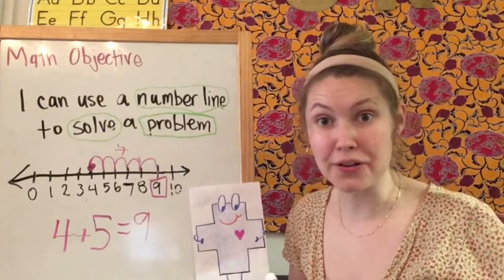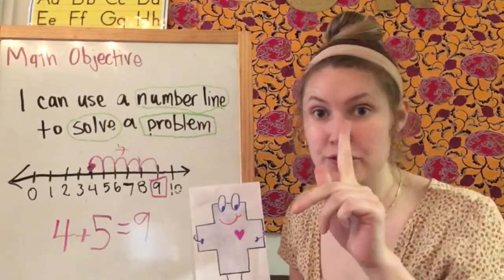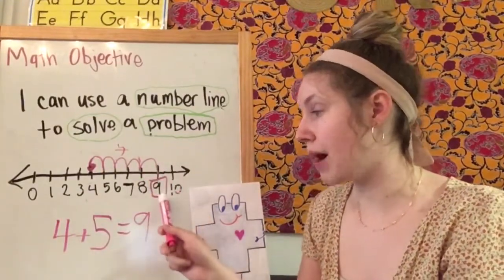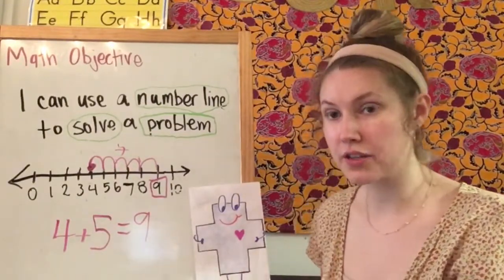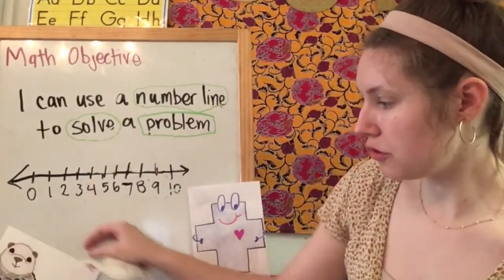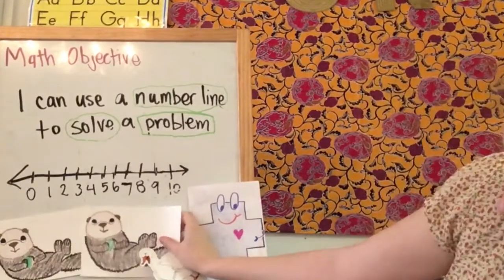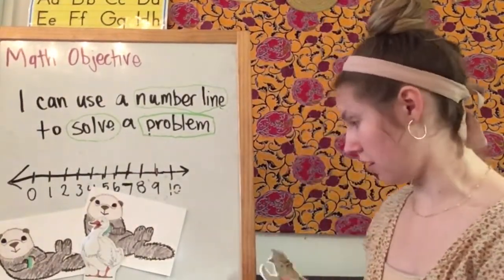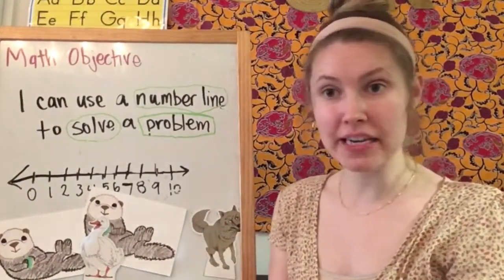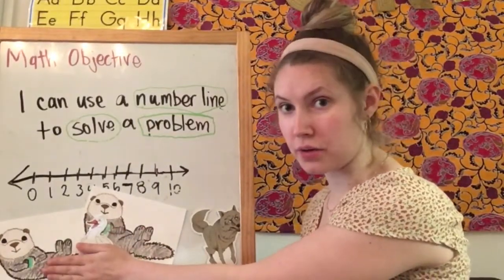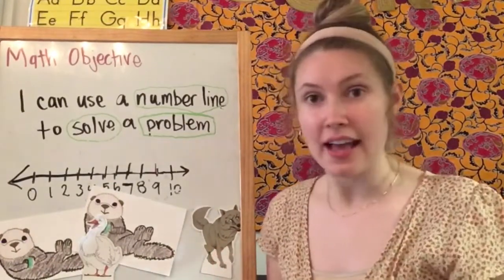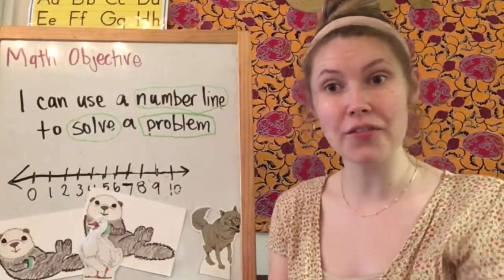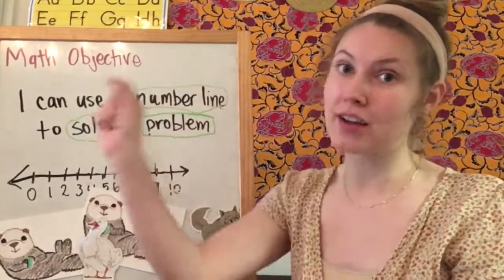Great job! Now you guys are going to try this at home. You're going to start with one story problem tonight, and I want you to show me how you solved it with your number line. Show me where it starts, show me the bounces, show me the box around the answer, and then write your number sentence. Here's your story problem: swimming in the ocean were two otters and a goose. Then a wolf comes along and jumps in — how many are in the ocean now? You started with those three and then one jumped in. Show me that on your number line, write your number sentence, and make sure you're showing me your bounces and your box around the number you land on.